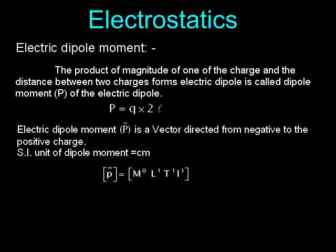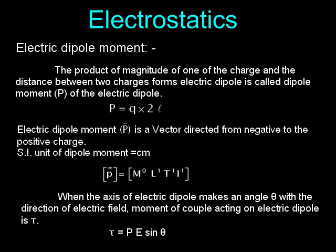Dimensions of vector P = [M⁰L¹T¹I¹]. When the axis of an electric dipole makes an angle θ with the direction of the electric field, the moment of couple (torque) acting on the electric dipole is: τ = PE sin θ.